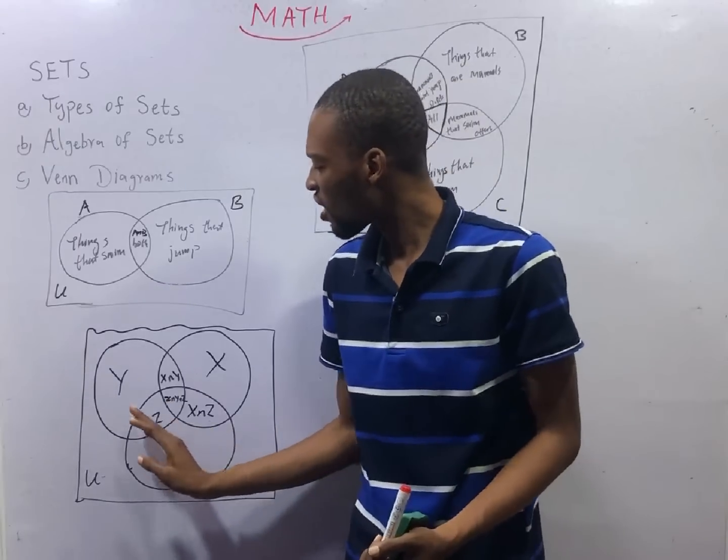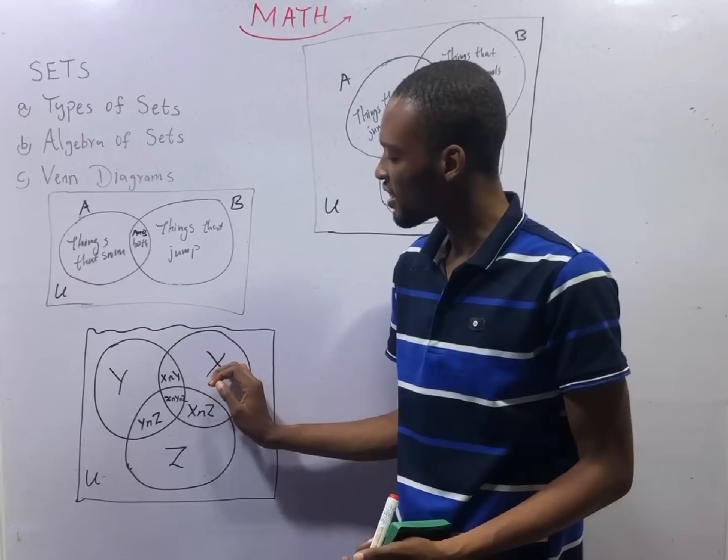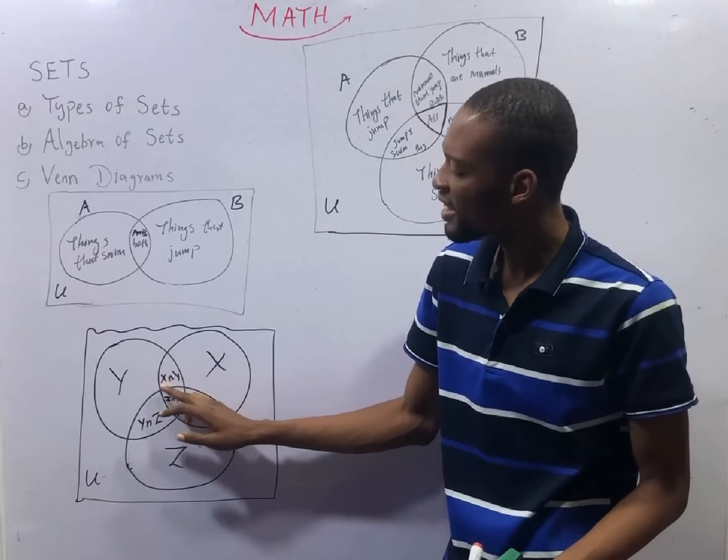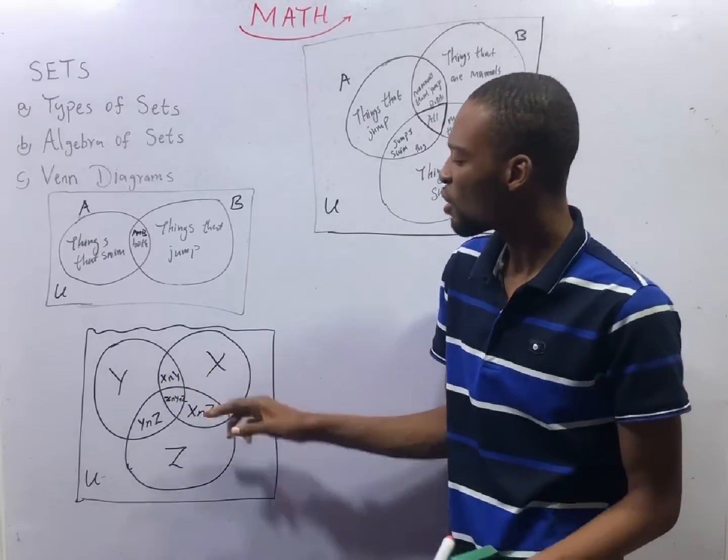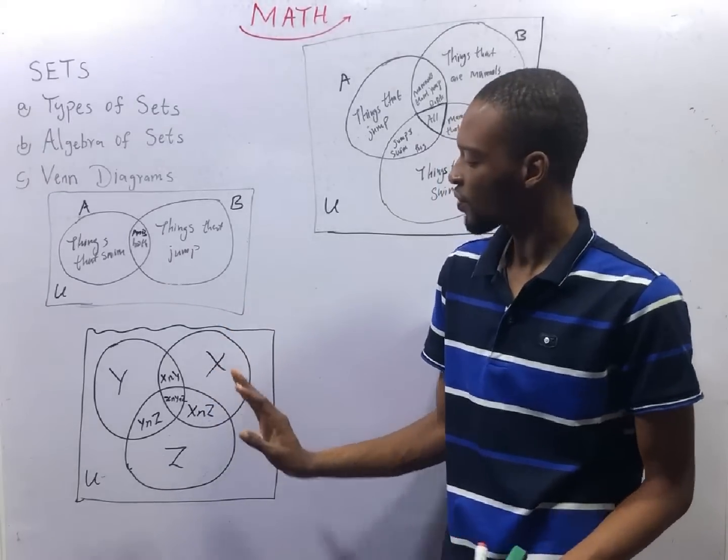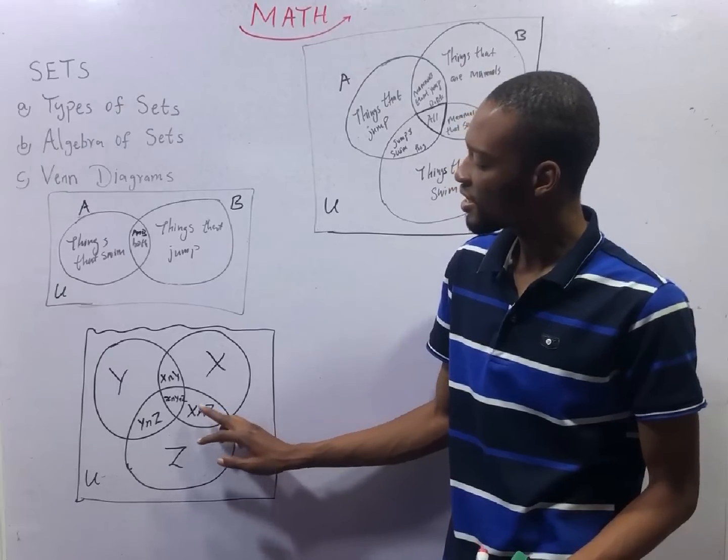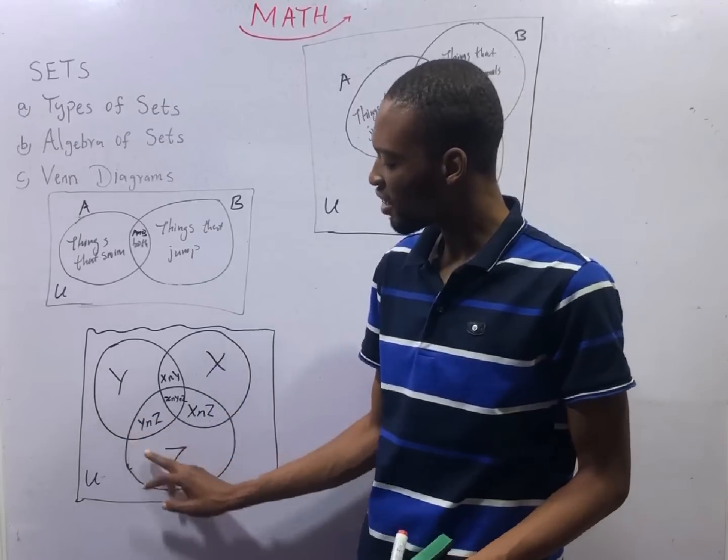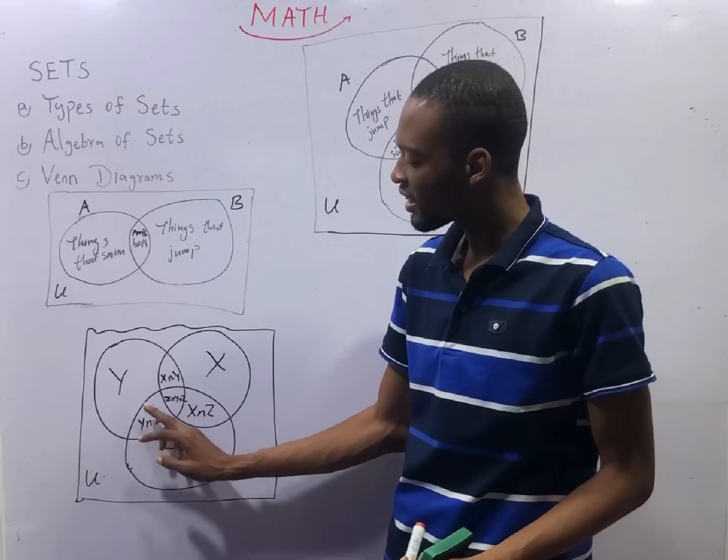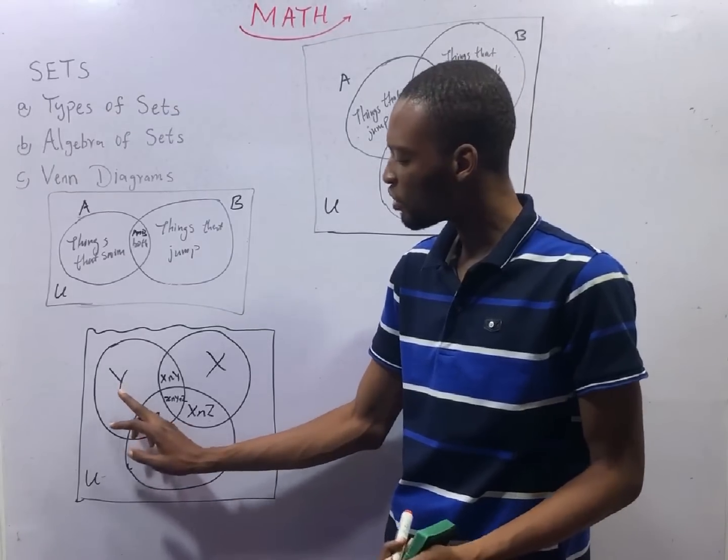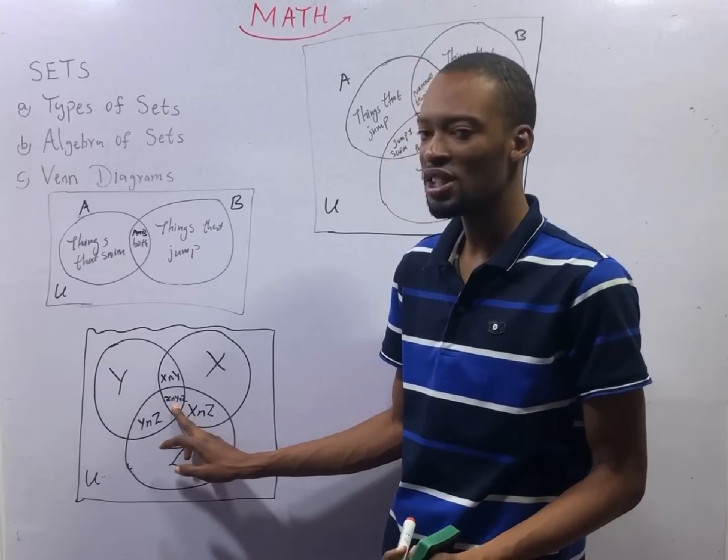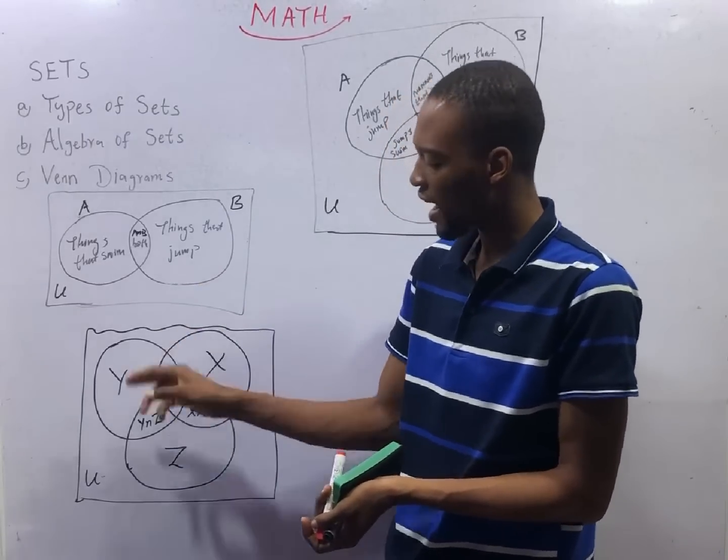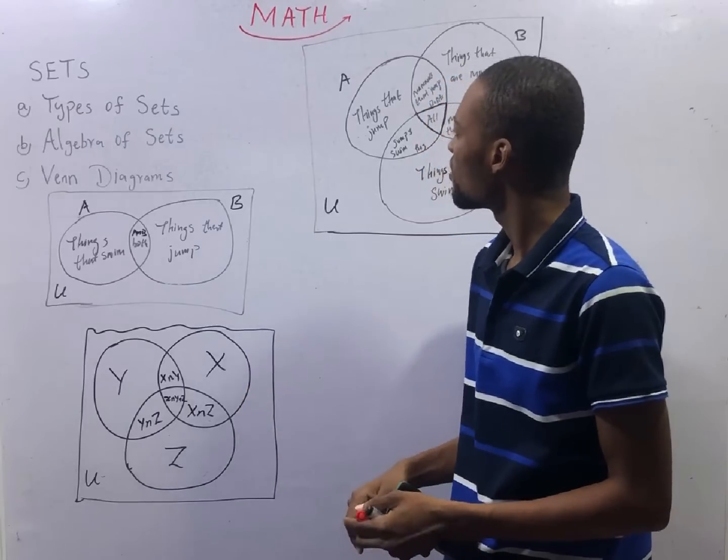Mathematically, we can call this part, if here is set Y, and here is set S, and here is set Z. This part between Y and S is simply S intersection Y, the thing that is common between S and Y. Between S and Z here is S intersection Z. Between Y and Z here is simply Y intersection Z. And this middle inside here will simply be S intersection Y intersection Z, what is common between S, Y and Z. This is basically Venn diagram.